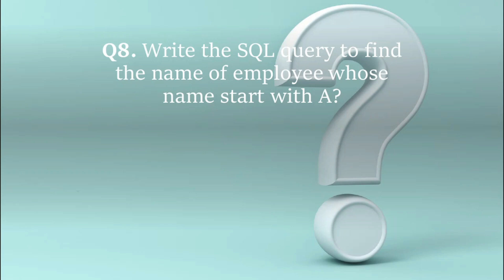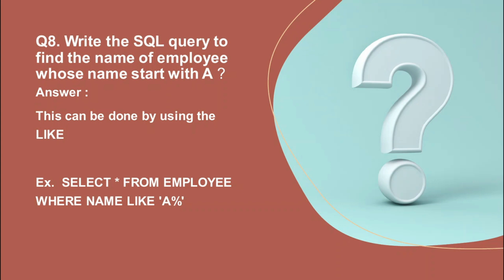The eighth question: write a SQL query to find the names of employees whose name starts with 'A'. This can be done using the LIKE operator. The syntax is: SELECT * FROM employee WHERE name LIKE 'A%'. The percentage sign is a wildcard — it means any characters after 'A'. You can also use wildcards at both ends, like '%A%D', to find names starting with 'A' and ending with 'D'.